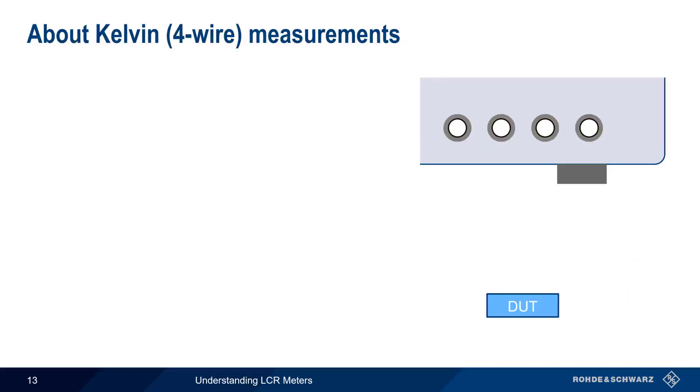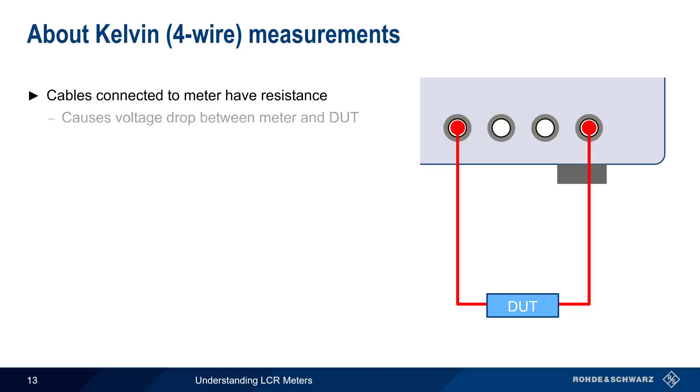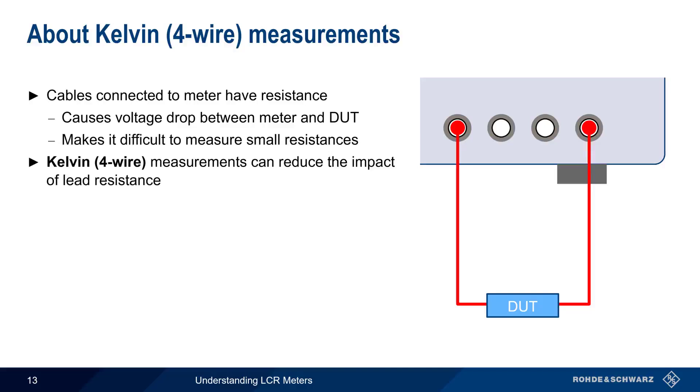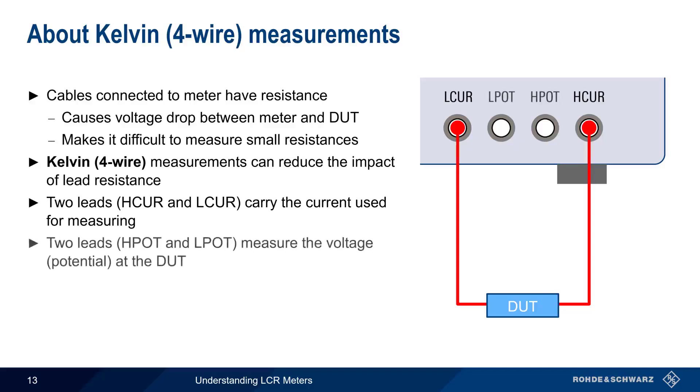Before we move on, let's stop for a moment to discuss Kelvin or four-wire measurements. The cables connected to our meter have resistance. And although this resistance is typically very small, it does cause a voltage drop between the meter and the device under test. In many cases, this very small drop can be ignored. But it can become significant when measuring small resistances. Kelvin or four-wire measurements are used to overcome this issue. In a four-wire measurement, two leads carry the current, but two additional leads are used to measure the potential or voltage at the device under test. These leads are connected to a very high impedance, so there's almost no current flow in these leads, and therefore almost no voltage drop. This allows the meter to measure voltage almost directly at the load, with minimal impact from the test leads.